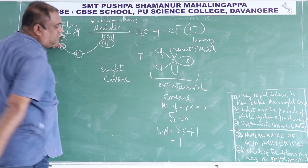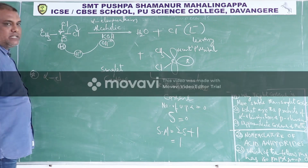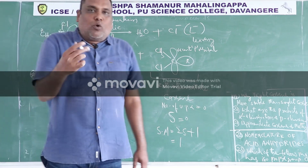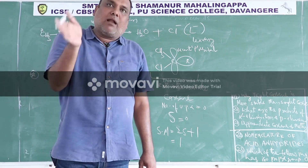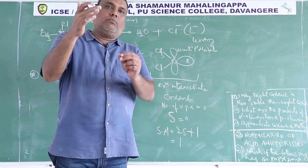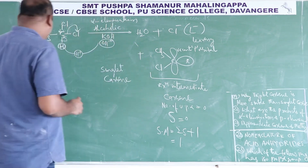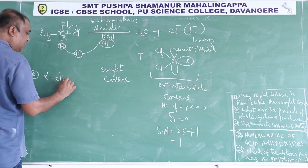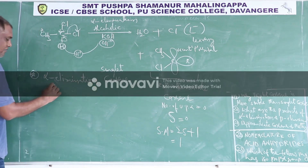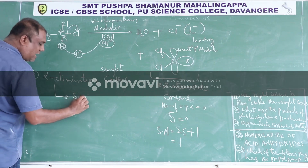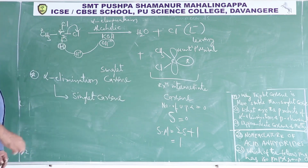The conclusion: alpha elimination means the loss of both proton and leaving group from the same carbon — the alpha carbon. That is why this elimination is called alpha elimination. Alpha elimination always gives singlet carbene.